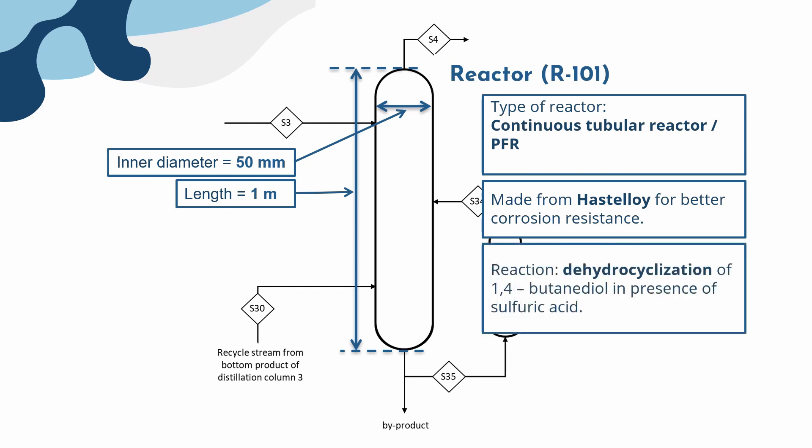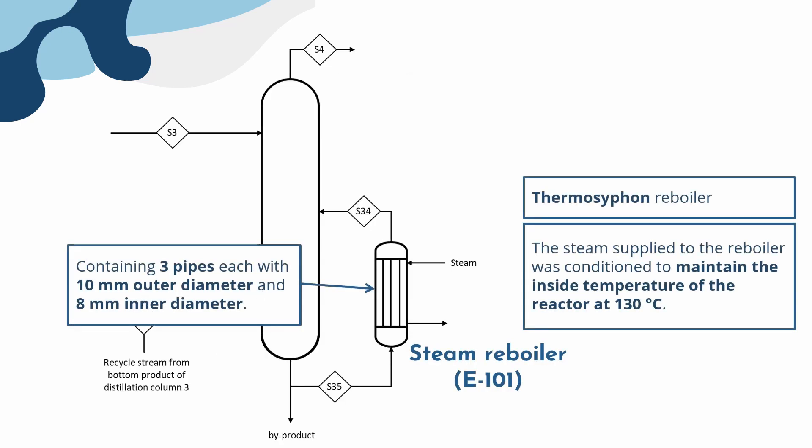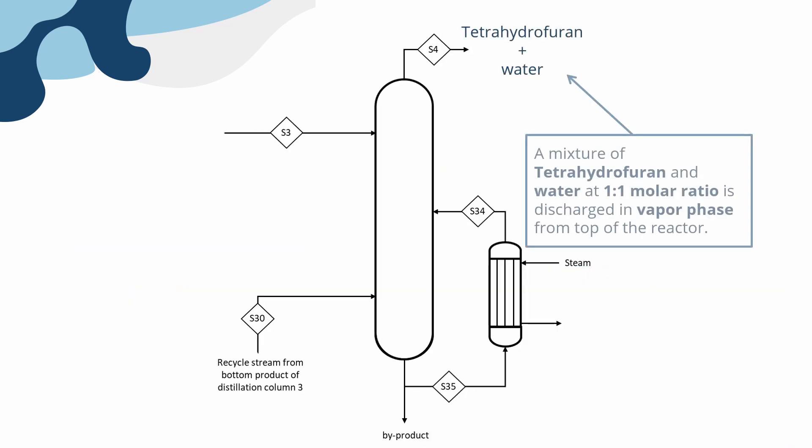In the reactor, dehydrocyclization of 1,4-butanediol occurred in the presence of homogeneous catalyst sulfuric acid at temperature of 130 degrees Celsius and pressure of 2 kg per cm³. Some of the liquid in reactor will float into the reboiler and heat it up to 130 degrees Celsius then float back into the reactor. Stream 4 is the top product that contained a mixture of tetrahydrofuran and water at 1 to 1 molar ratio in vapor phase at rate of 0.63 kg per hour.